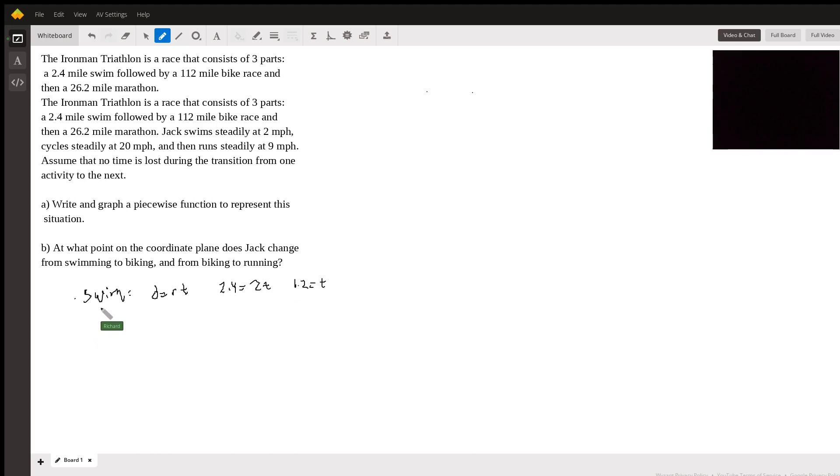And then after he swims, he rides his bike. So we'll do the same thing for biking. Distance equals rate times time. And the distance that he spends biking is 112. That's coming from here. And he's biking at the rate of 20 miles per hour. So we just put that into the calculator and I get 5.6 is the time that's spent biking.